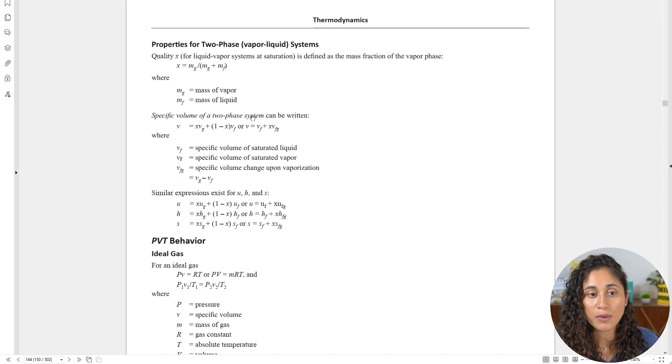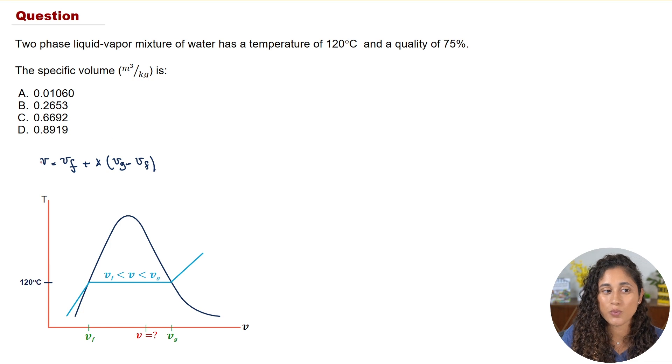You can use the first equation or the second equation, it doesn't really matter they're the same. I'm going to actually use the second equation and then also I'm going to replace this term here vfg by the saturated vapor minus the saturated liquid. Now we have to go to the steam table so that we can find the specific volume of the saturated vapor and the saturated liquid.